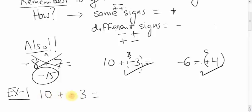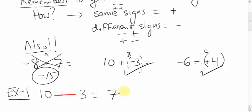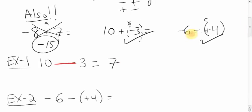Let's do 10 + (-3). You can use the number line if you like, but let's try the trick. You have a plus and a minus — they are different signs. Different signs simplify to one negative sign. So you take those two different signs and replace them with a single minus sign, and you're left with just 10 - 3, which is 7. Done.